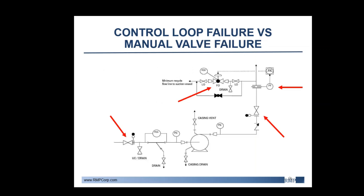Now let us look at actual scenarios we may see pop up during a PHA. We will be taking a look at a control loop failure versus a manual valve failure and the differences in the safeguards that can be credited. We are going to focus on three specific scenarios: the manual valve on the suction to the pump, the manual valve on the discharge of the pump, and the flow control valve on the discharge of the pump. We will assume the manual valves inadvertently close, and that the flow control valve failed closed due to the flow transmitter misreading. We are also assuming flammable hydrocarbons are flowing through this pump.